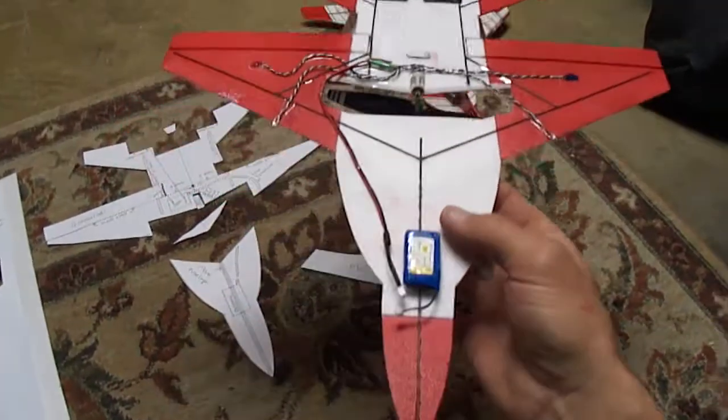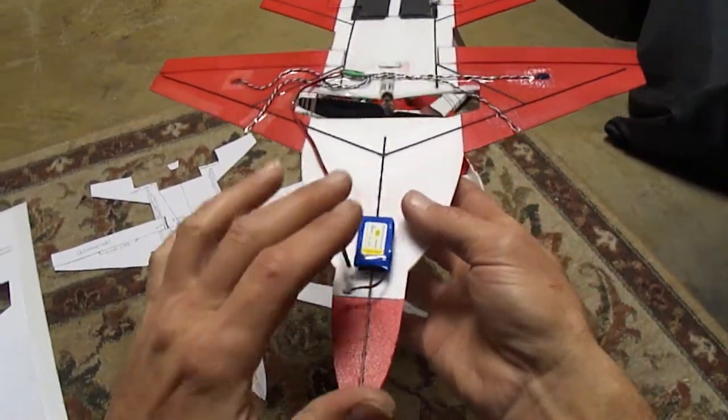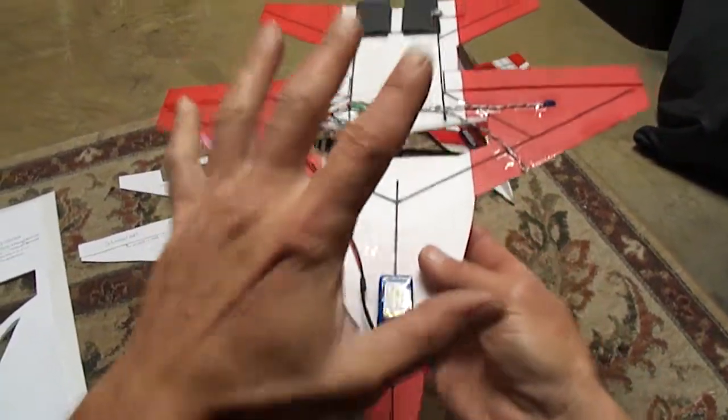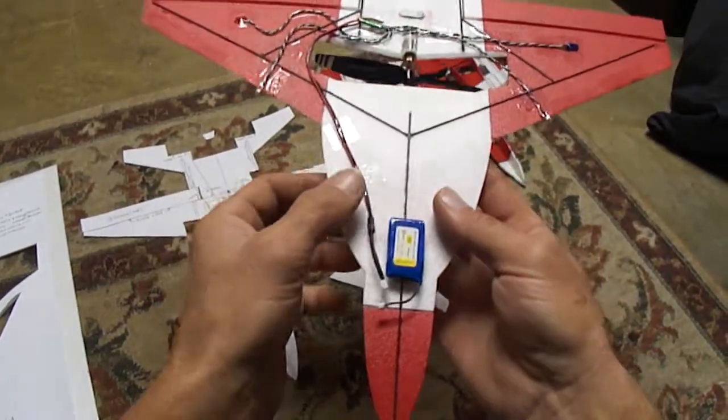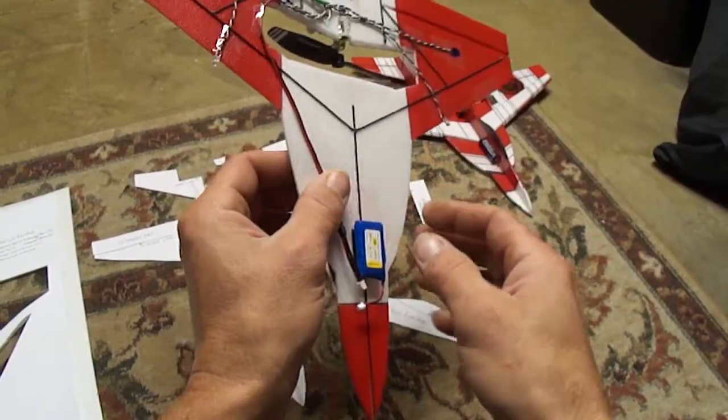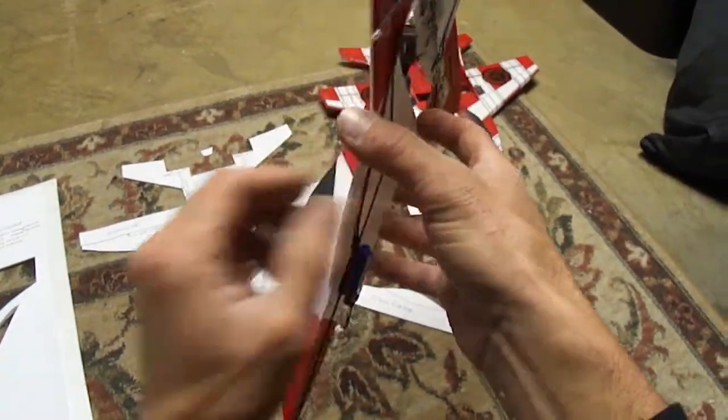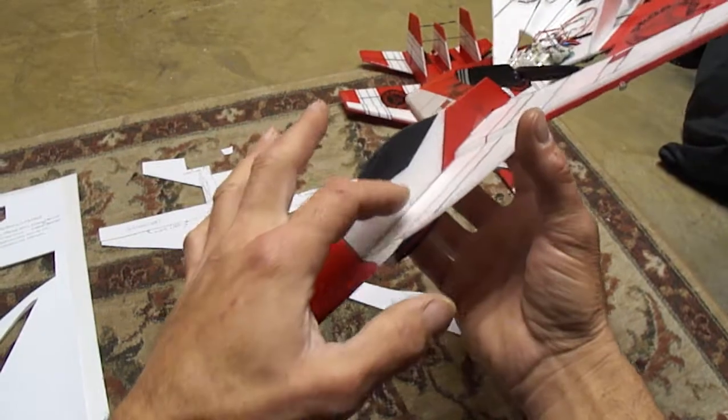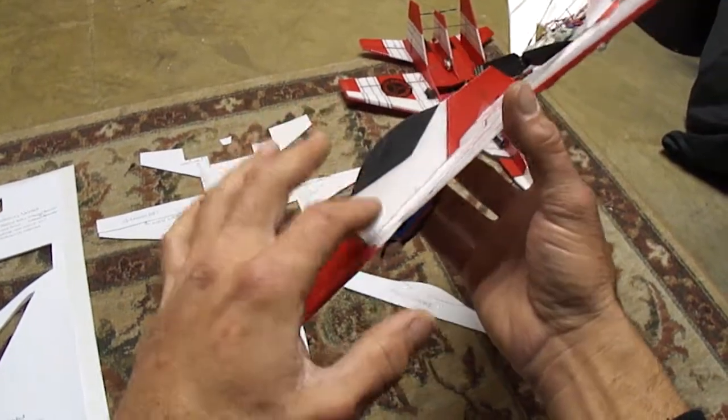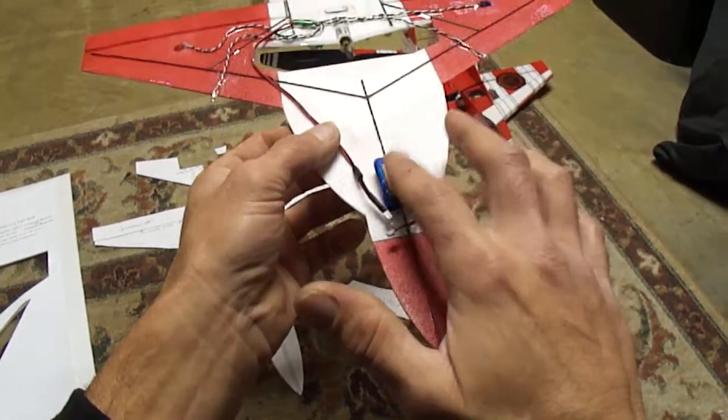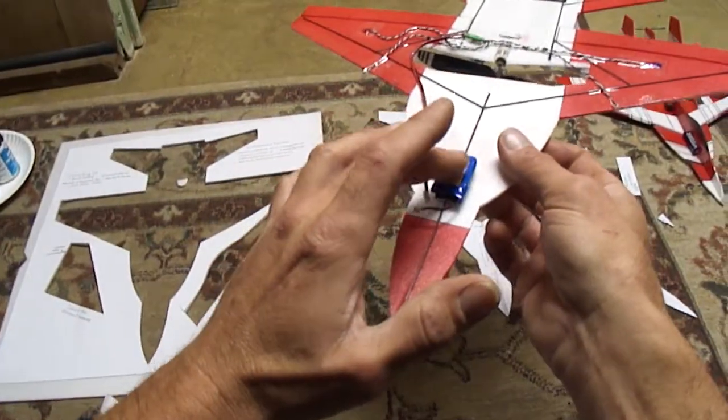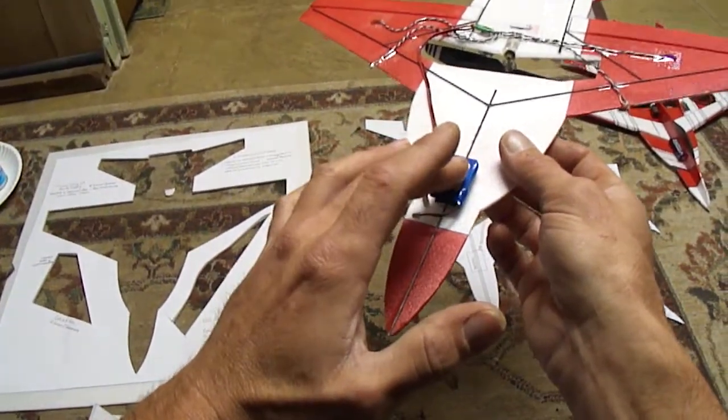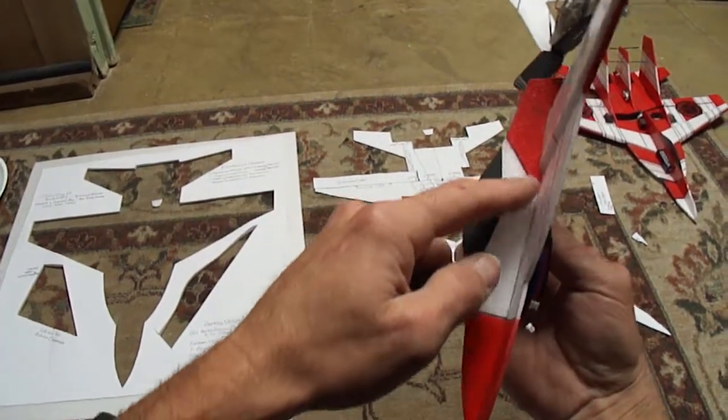I always mount the battery on the bottom of my planes when I first build them. That way if your CGs off you can always just move your battery around and that goes for all the planes I build. And then if you wanted to you could turn around and cut a spot here for your battery. But all my planes I make sure I mount the battery on the bottom with some blue painter's tape and then take it out for a flight and make sure I got the CG right before I do any cutting into the canopies.